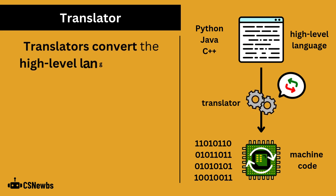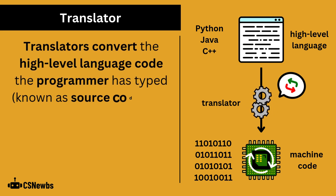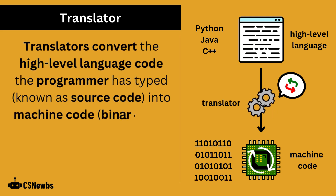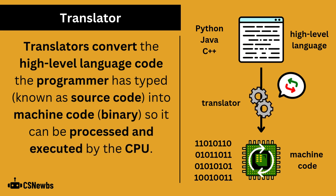Translators convert the high-level language code the programmer has typed, known as source code, into machine code so it can be processed and executed by the CPU.